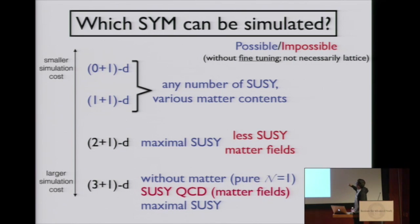In zero plus one dimension, this is just quantum mechanics. In one plus one dimensional theory, any number of SUSY and various matter contents, essentially all kinds of theory can be studied on computer. In two plus one dimension, for maximal SUSY, we know how to study it.